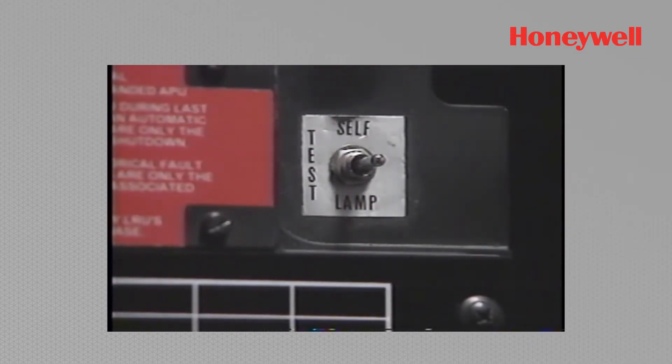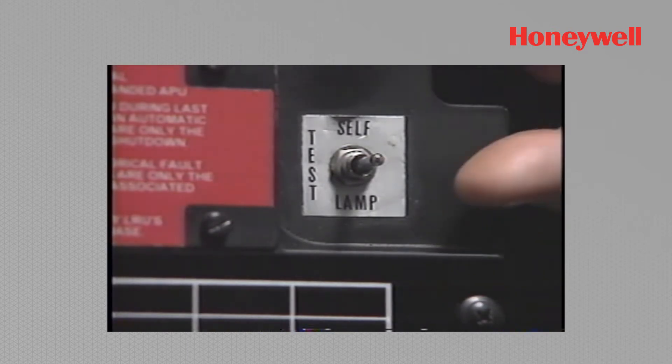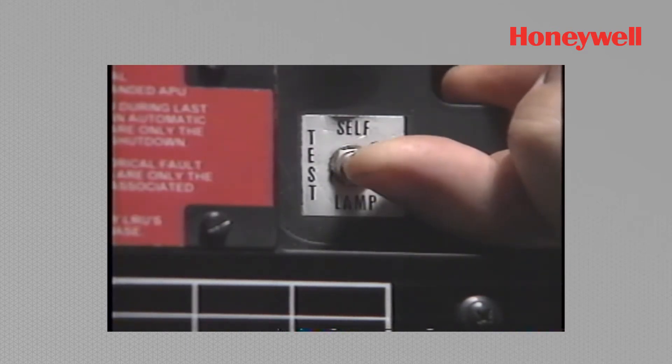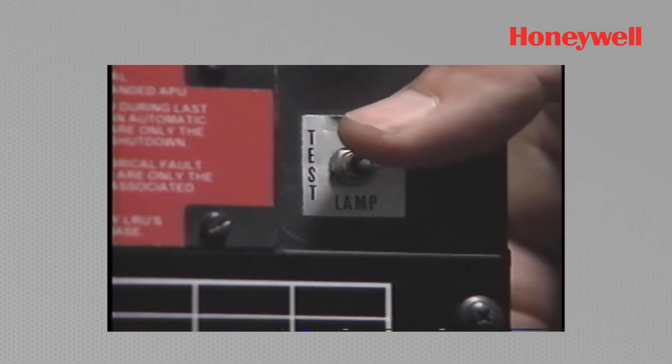In the upper right-hand corner, the test switch is a two-position toggle switch that selects either the self-test mode in the up position or the lamp test mode in the down position.